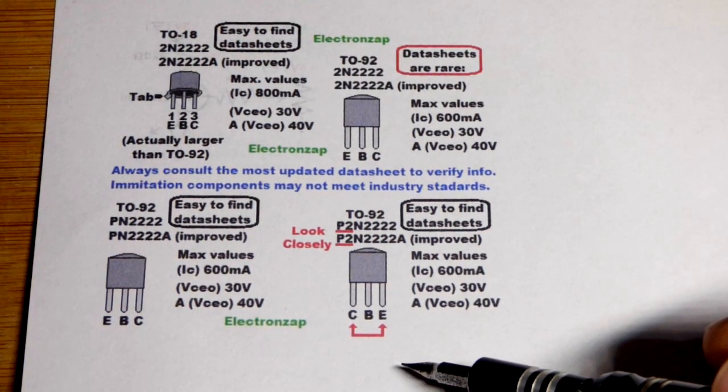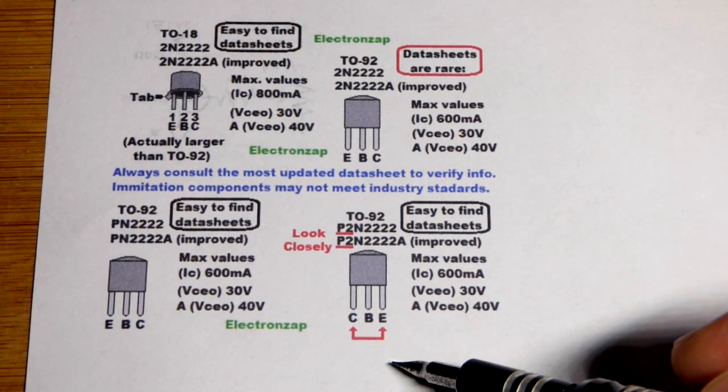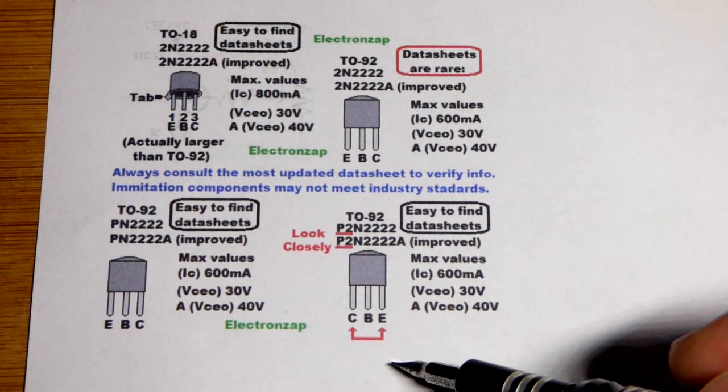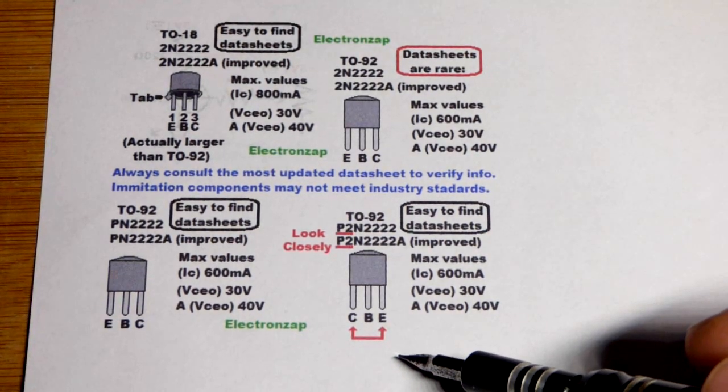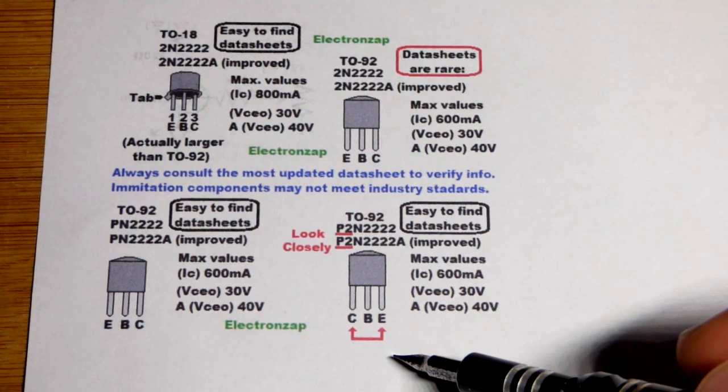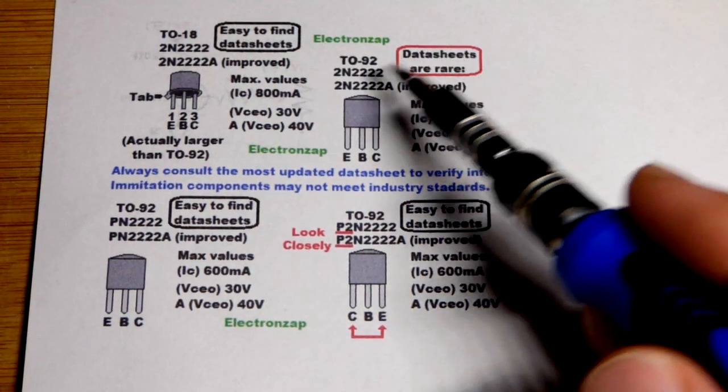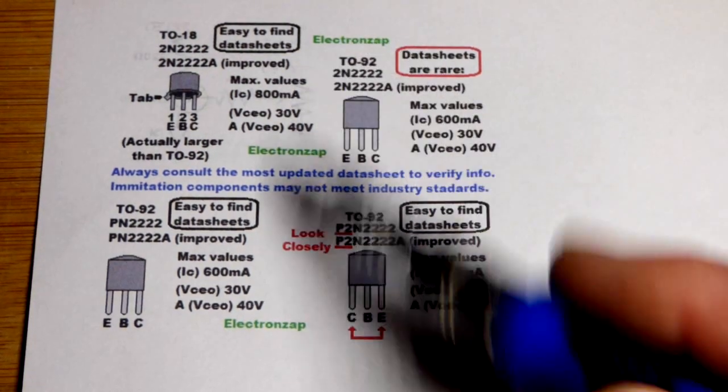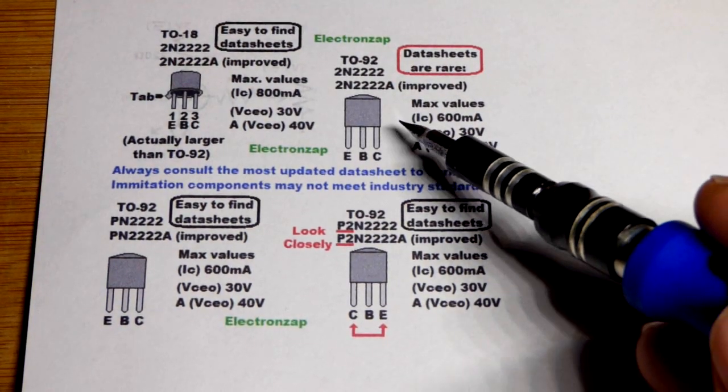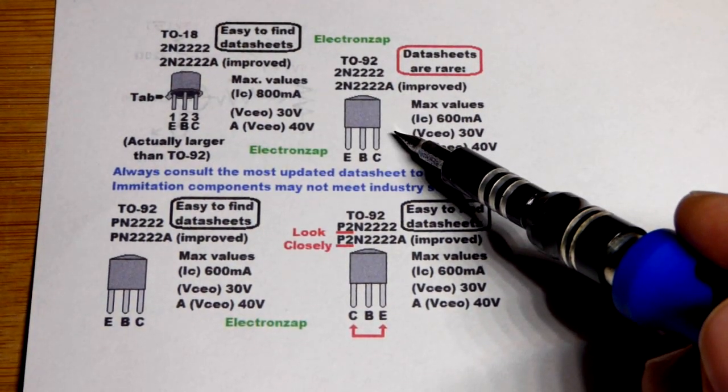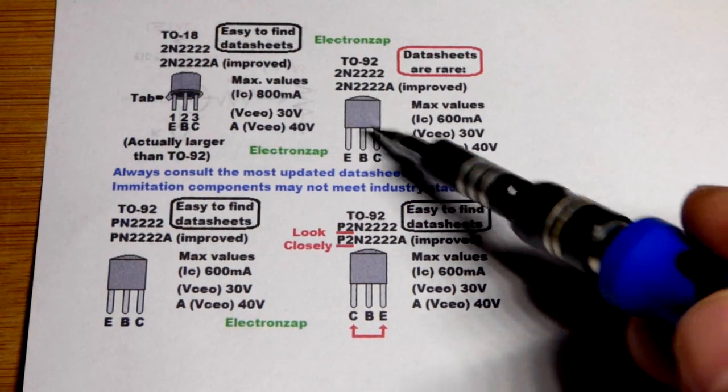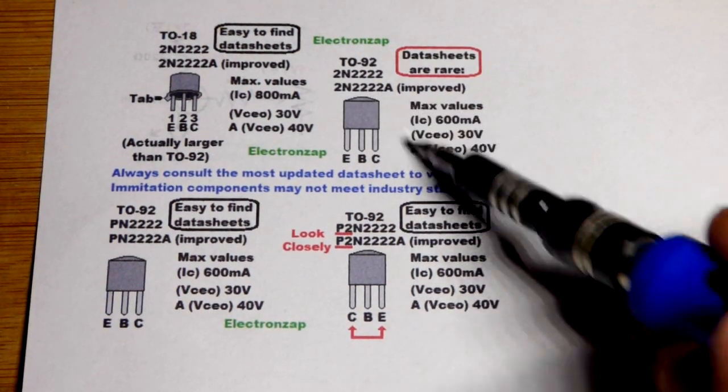I don't run into that with really any other components. Nothing I can think of right now. There might be one or two where I did, I don't get the exact datasheet that I was looking for when it's a specific part number. But right now this is really the only one that I always run into and find it the most annoying to try to find just a regular 2N2222 datasheet.